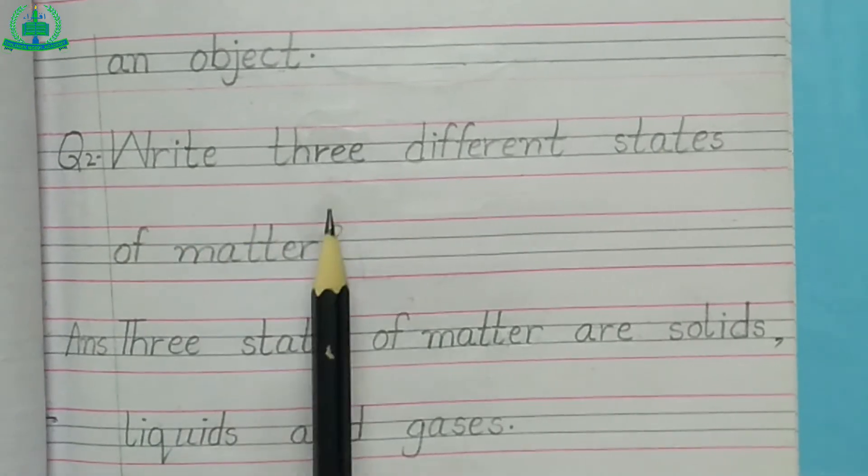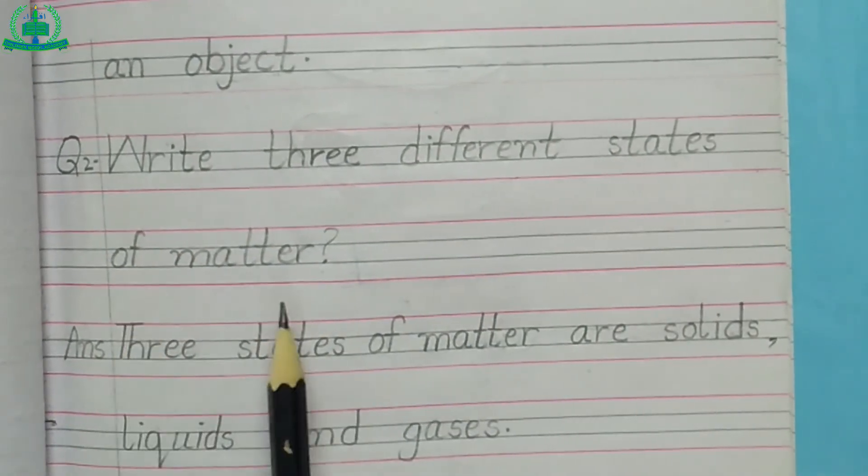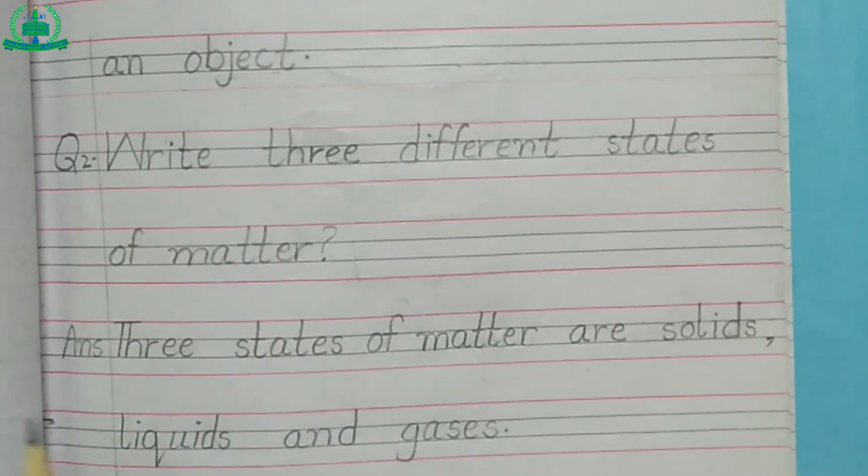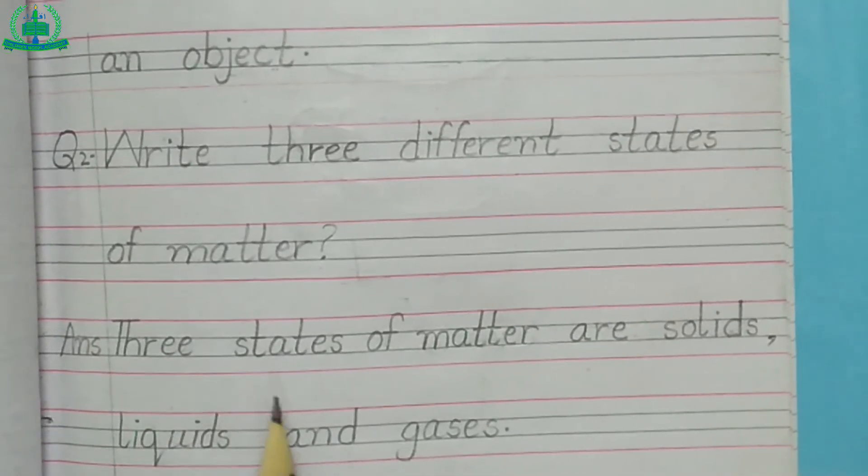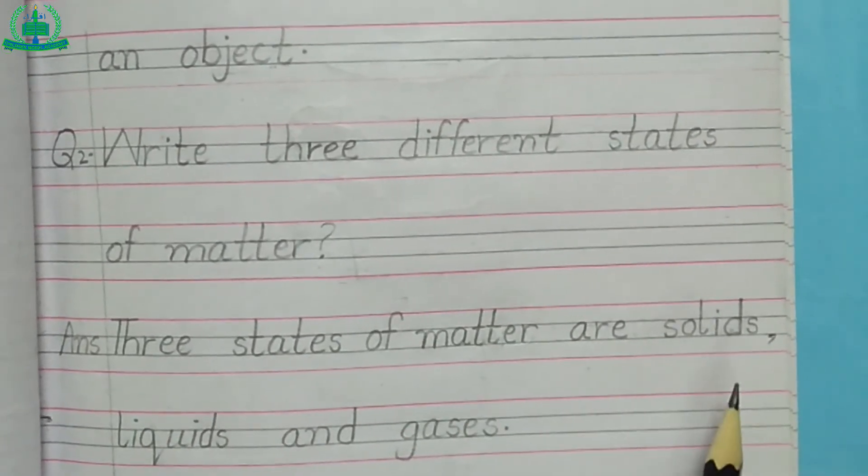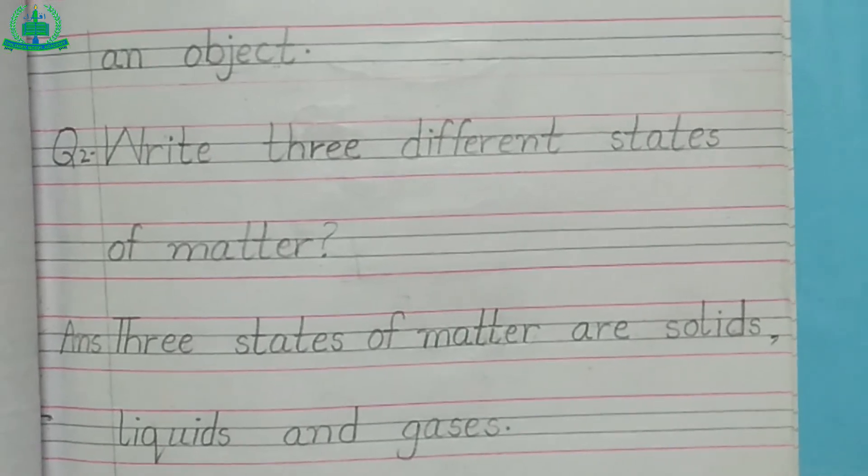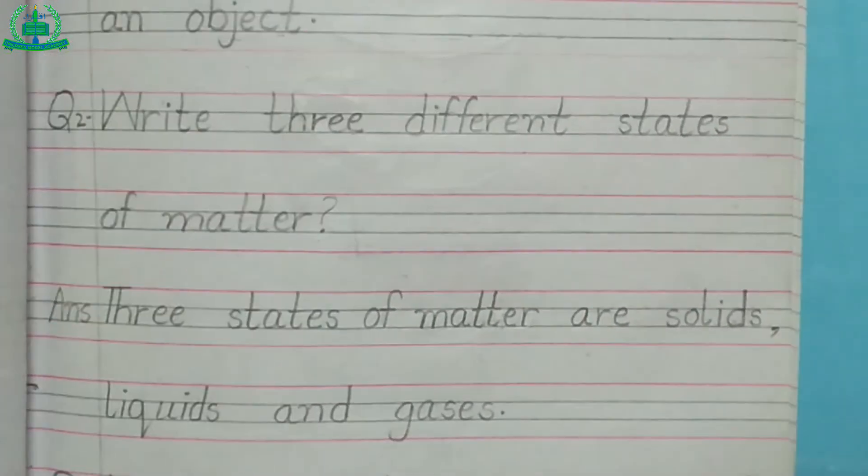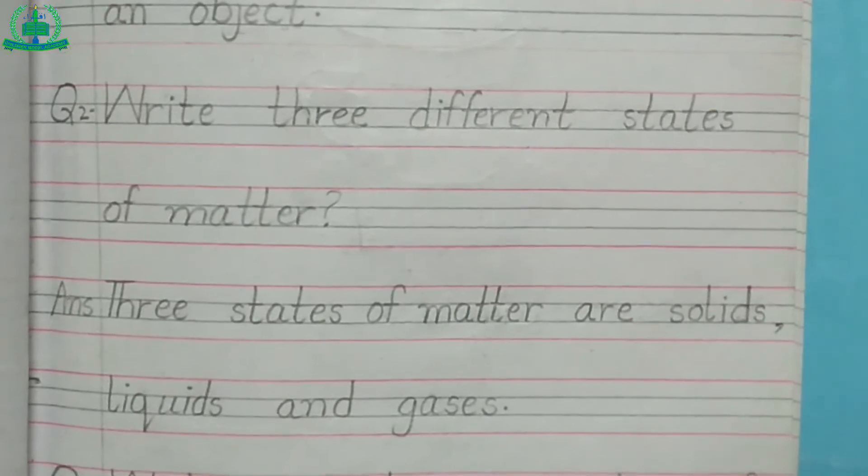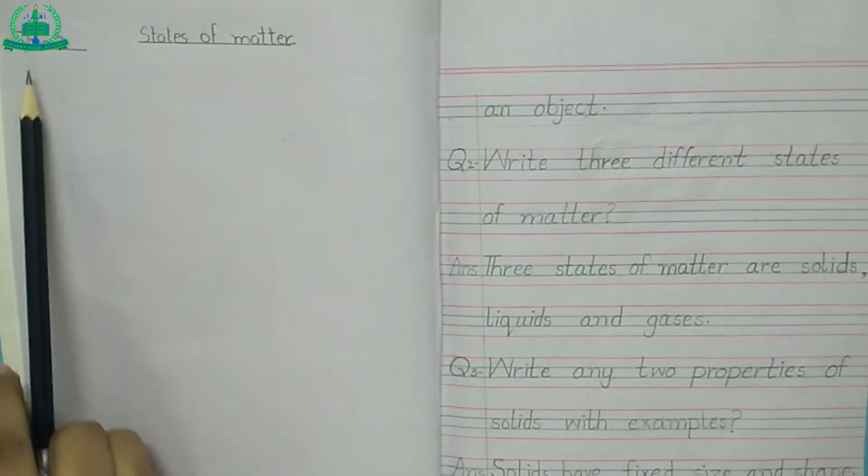Question number 2: Write three different states of matter? Answer. The three states of matter are solids, liquids and gases. And draw a diagram next to portion number 2.